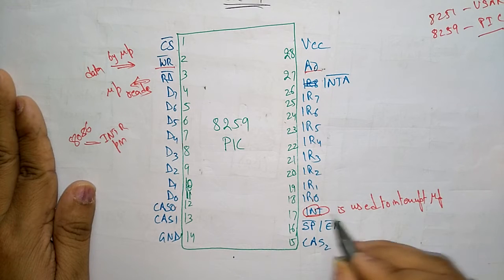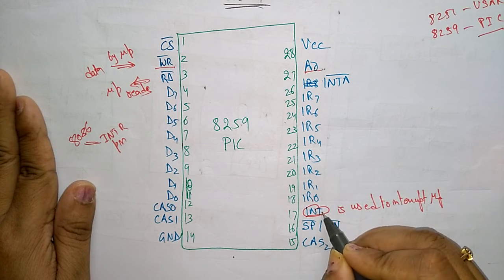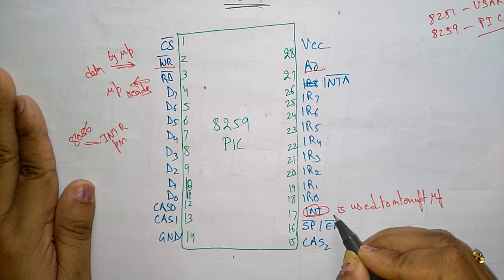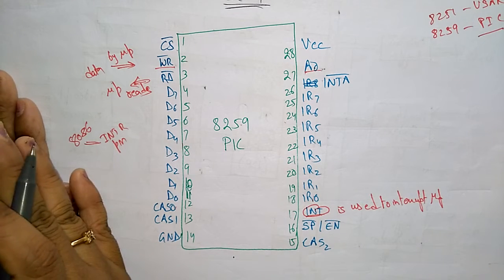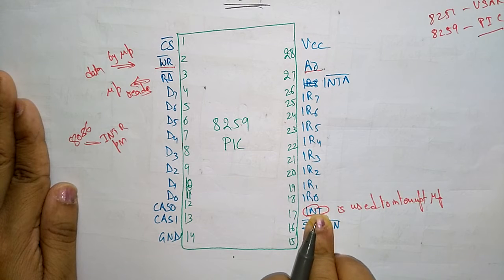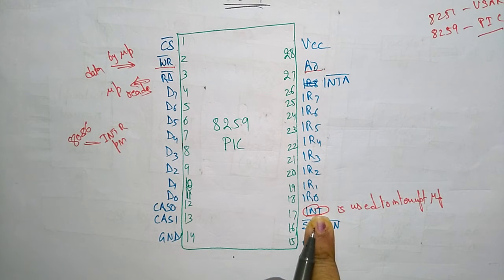This interrupt INT pin is used to interrupt the microprocessor and this has one more feature: it checks whether it receives a valid interrupt or not. So before sending to the microprocessor, this INT pin is checking whether the interrupt that is issuing to the microprocessor is valid or not.